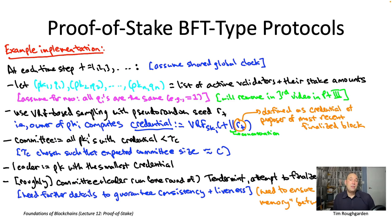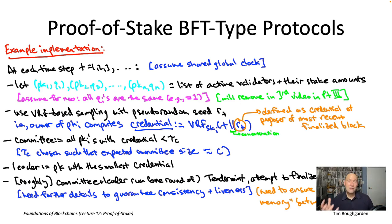Remember the basic idea, which is to reduce permissionless consensus to permissioned consensus through the invocation of a Sybil-resistant random sampling procedure — in this case, based on proof-of-stake random sampling.